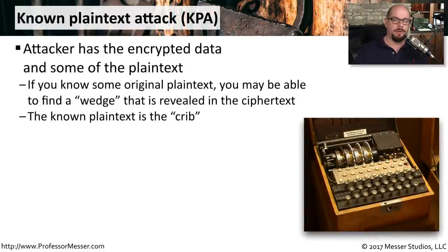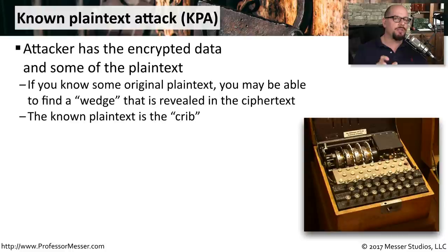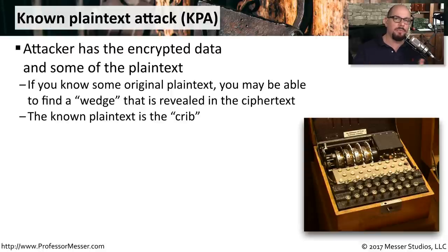One attack against a number of different cryptographic methods is called the known plain text attack, or KPA. This is when the attacker has the encrypted information, but they also might have a little bit of the plain text — something they were able to discern perhaps in some other way. If you have a little bit of the plain text, you may be able to start breaking down the cryptography. This known plain text is often called the crib, and it helps you determine what the rest of the plain text happens to be.